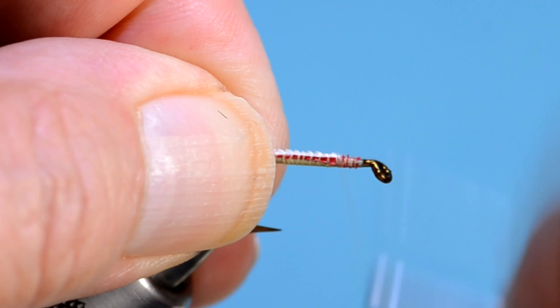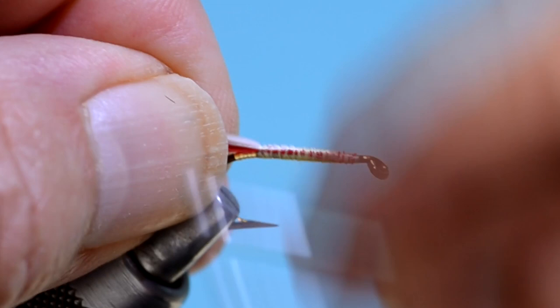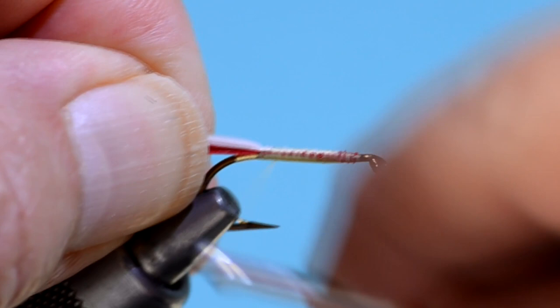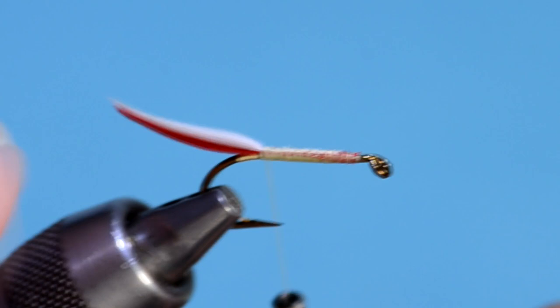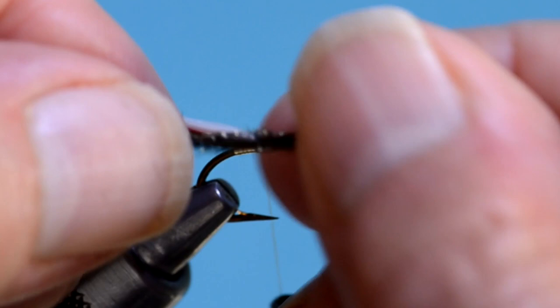It's a good idea to always hold the tail up as you do almost anything on a fly. If you hold it up and in place, it's less prone to be a victim of thread torque.